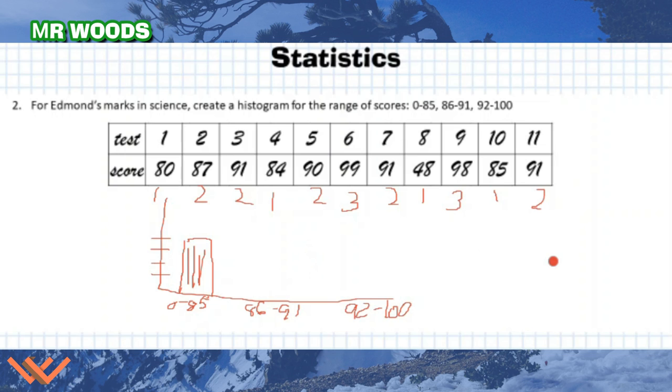And then I have 86 to 91. That's my second value. So I have one, two, three, four, five. I need to bring it up a little bit more. I'm going to come right over. There we go. And I have 92 to 100. So I have one, two, one, two. Now I can number this here just so that people can understand what's going on. And so there is my histogram of data that's distributed between the range of zero to 85, 86 to 91, and 92 to 100.